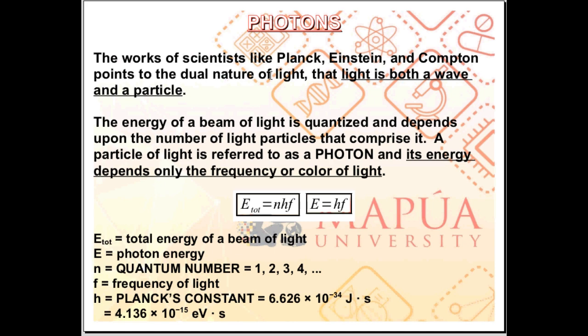The works of scientists like Planck, Einstein, and Compton points to the dual nature of light. Light has been observed to behave both as a wave and at the same time as a particle. The energy of a beam of light is quantized, meaning it is limited to a set of values or limited to certain values only, and depends upon the number of light particles that comprise it.